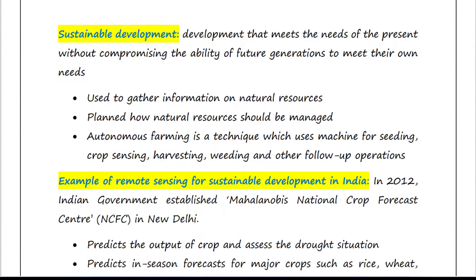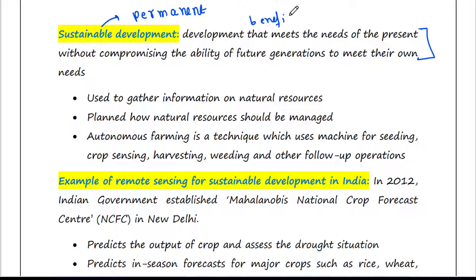What is sustainable development? Sustainable development is a development that meets the needs of the present without compromising the ability of future generations to meet their own needs. Anything which is permanent is called sustainable. We can develop something for our country or world which is beneficial for our future generation and for us too. So we can use remote sensing for this purpose.